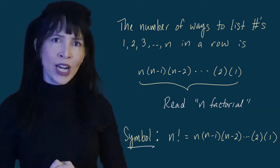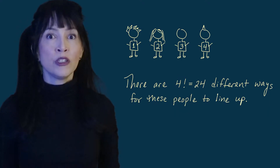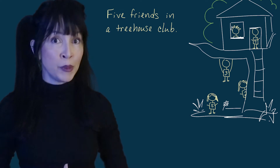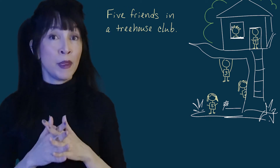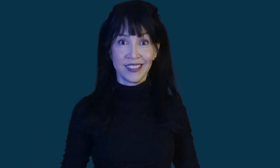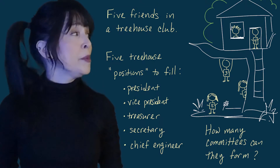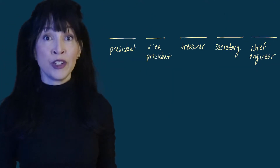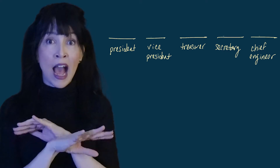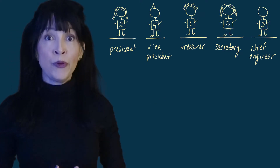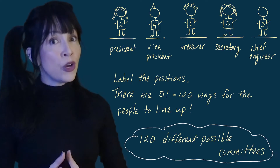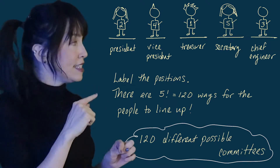So we know there are 24 different ways to line up four friends. Now suppose I'm putting together a treehouse club — I'm not in it — with five people, and I want to give them the positions of president, vice president, treasurer, secretary, and chief engineer, because you've got to have a chief engineer in a treehouse. How many committees can I form? Because there are five people I can do this in five factorial ways — five times four times three times two times one — which is 120. So there are 120 different ways to assign these titles.